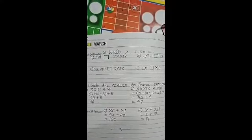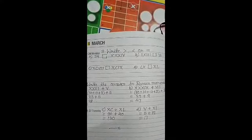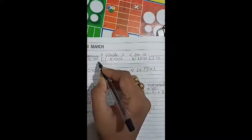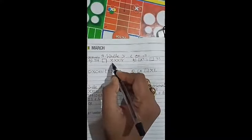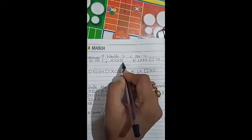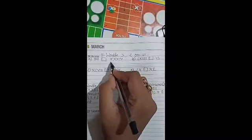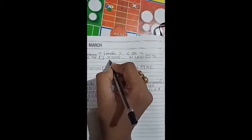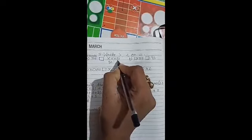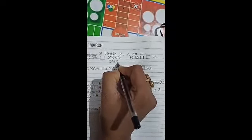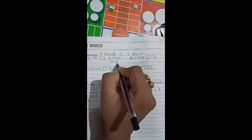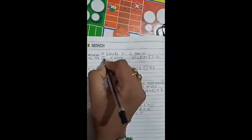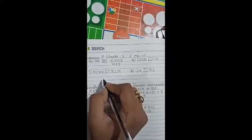Now, question number 3. Write greater than, less than or equal. First, 34 and here XXXIV. XXX means 30 plus 4 means 34. 34 is equal to 34 means equal sign. Okay?